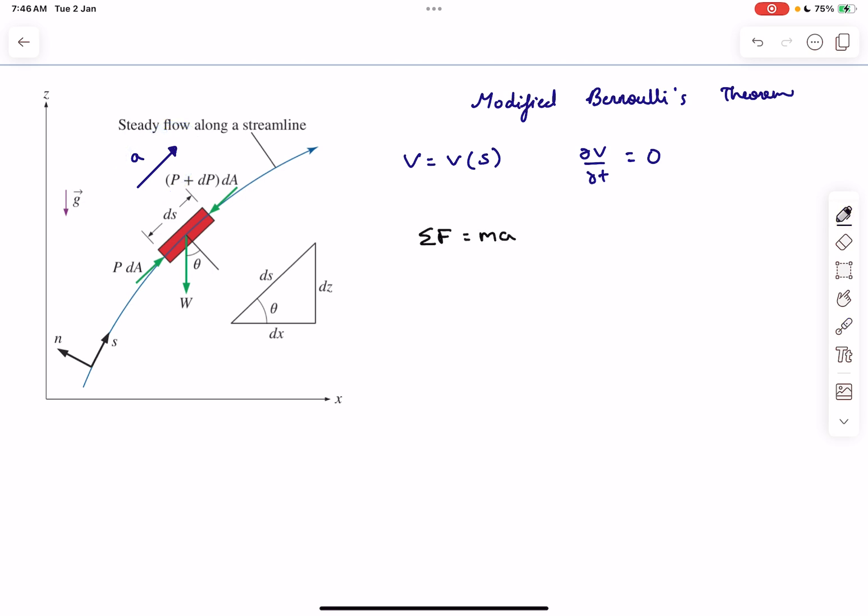Let's assume the acceleration a of the element is in this direction tangential to the streamline. Now let's write the force balance equation along the streamline. The driving force is p·dA - (p + dp)·dA minus the component of weight W sin θ, where the weight is ρ·ds·dA·g. This equals the mass ρ·ds·dA times its acceleration.